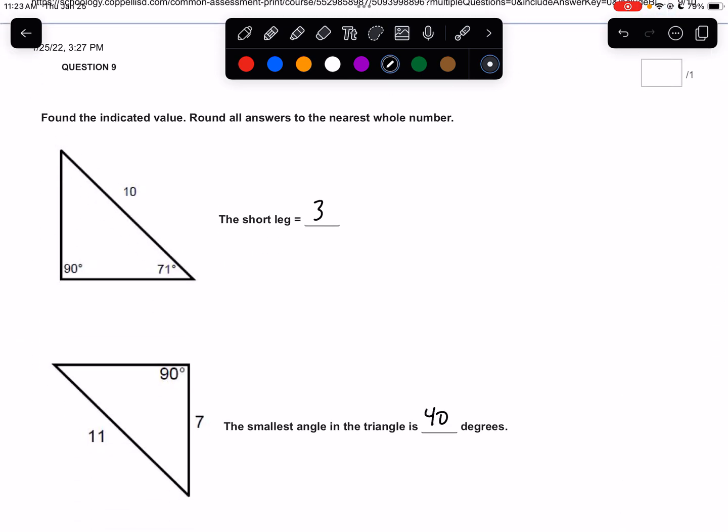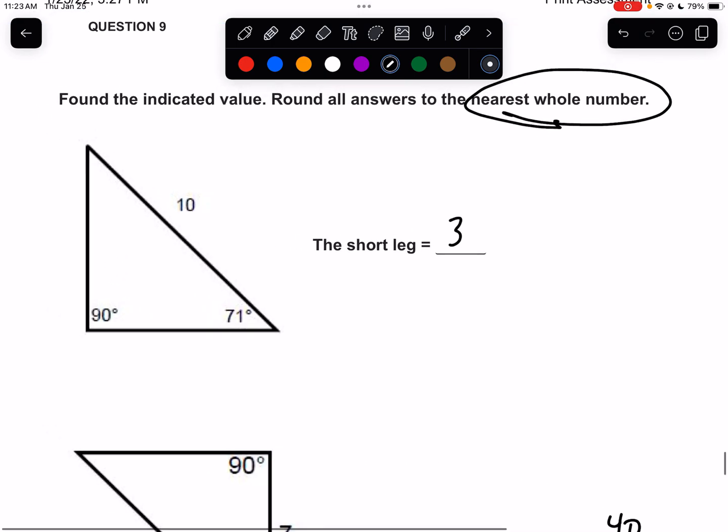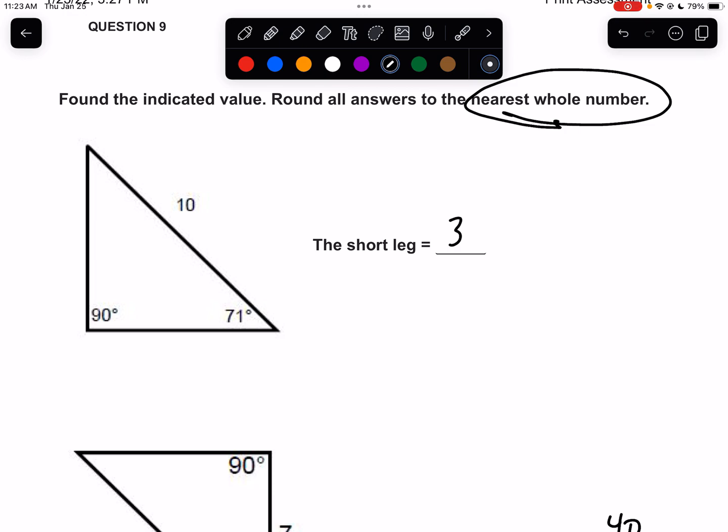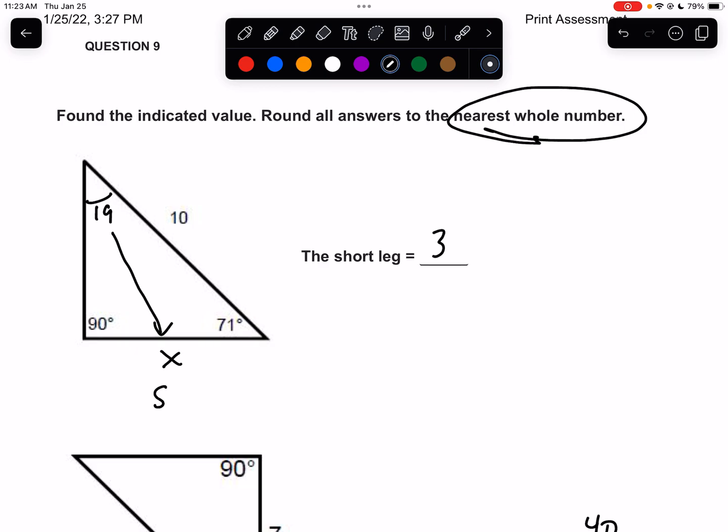Find the indicated value around all answers to the nearest whole number. Nice. So what do we have here? We have a right angle. We're trying to find the short leg. Well, if that's 71, then this would be 19. So this would be the short leg. Remember that the short leg is always across from the small angle. So 71 is bigger than 19. So this would be the short leg. Over here would be the long leg. So based off that, I have two options. I could use the 19 or the 71. It doesn't matter. I'm going to use the 71. So this would be adjacent over hypotenuse. So this would be the cosine of 71 equals adjacent X over hypotenuse 10. So that is 10 times the cosine of 71. 10 cosine 71 is 3.2 something, which rounds down to 3.